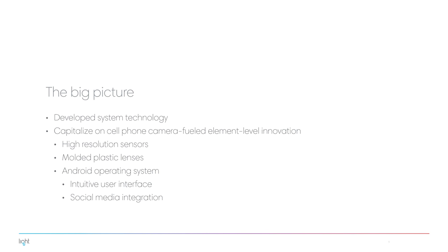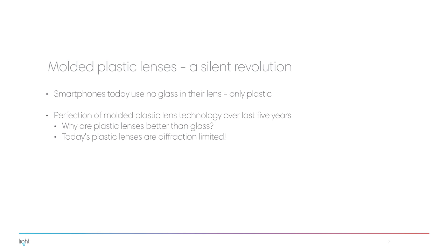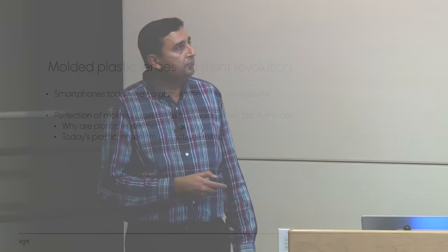At the big picture level, we've developed systems technology capitalizing on all the camera element-level innovation that's taken place thanks to smartphones. Smartphones have resulted in high-resolution, high quantum efficiency sensors that steadily improved because there was a need to take good quality pictures. The other major innovation is molded plastic lens technology, perfected over the last five years. Also, mobile devices based on Android or iOS offer far better user interfaces and many more apps — so basing our camera on Android gives it a 21st century interface versus the 20th century interface traditional cameras have, with social media integration built in.